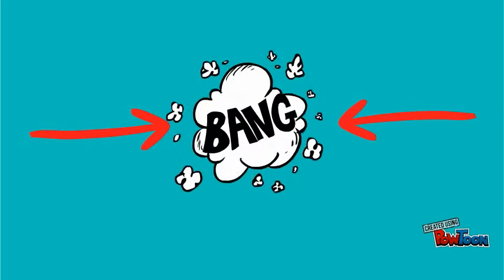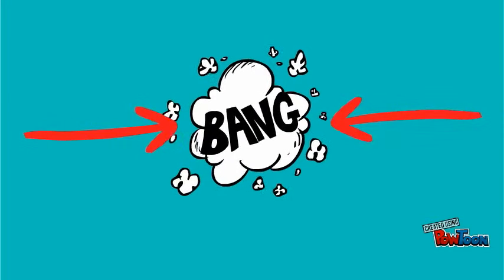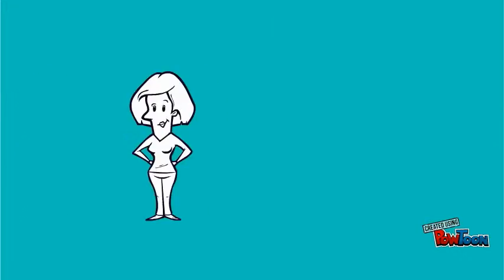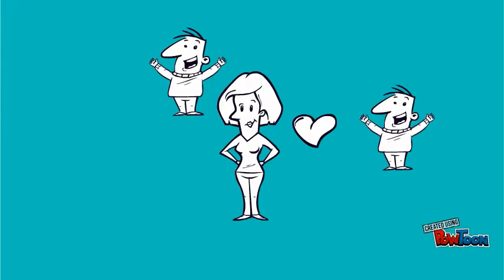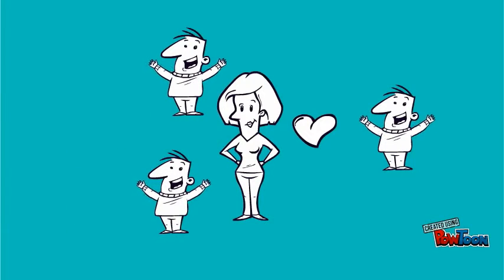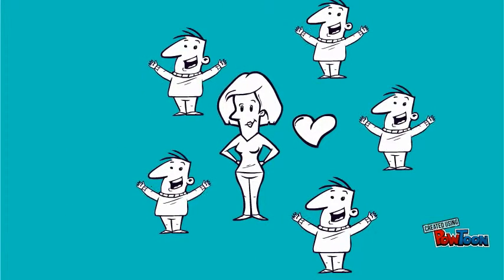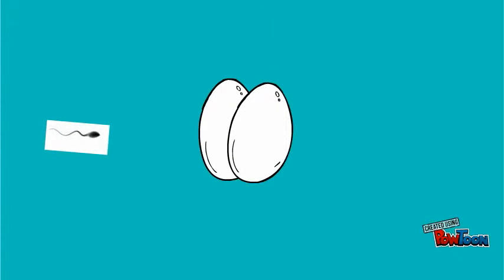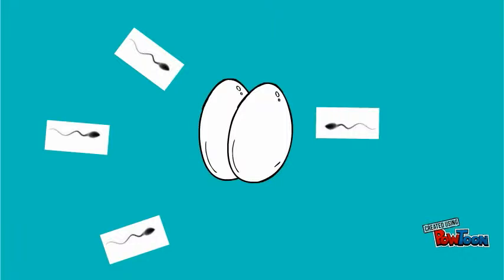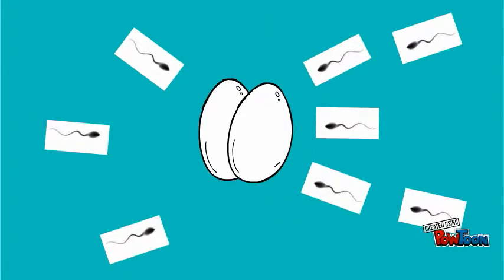In direct combat, males physically battle for the right to mate with a female. In some species, females may mate with multiple males during a single reproductive cycle. When this occurs, sperm from different males must compete for access to eggs. Males have developed a variety of strategies to increase the probability that their sperm will fertilize the female's eggs, including increased volume of ejaculate in the presence of competing males.